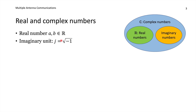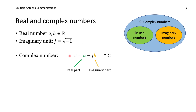The imaginary unit is equal to the square root of minus 1. We then have an additional type of numbers called imaginary numbers — when we take a real number and multiply it with the imaginary unit, we get an imaginary number. Note that in electrical engineering we use j to denote the imaginary unit, while in mathematics i is used instead. But i is the current in electrical engineering, so that's why j is used.